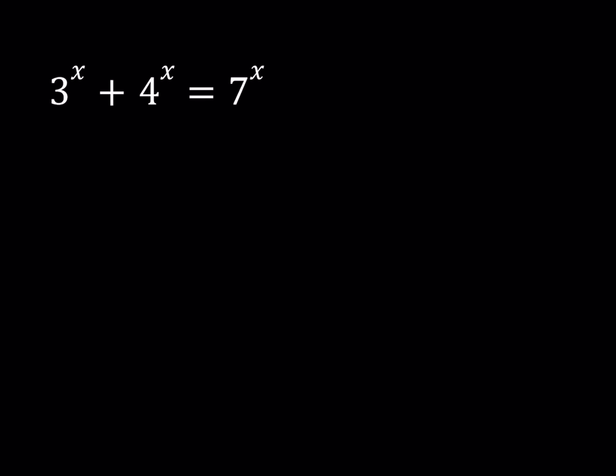Let's look at our second equation, which is pretty similar. This one is 3 to the power x plus 4 to the power x equals 7 to the power x. You might even guess the solution without knowing the Pythagorean theorem — if you said x equals 1, you're right, because 3 plus 4 equals 7. So x equals 1 is a solution. We're going to use a similar approach to find other solutions or prove there are none. That's actually one reason I put these two equations together — to compare and contrast, since their solutions differ but the method is the same.